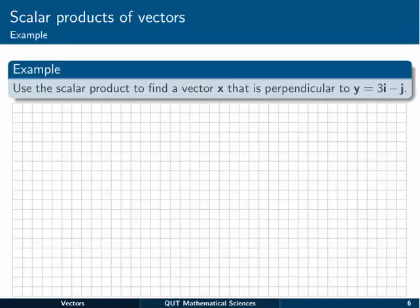Let's check out this example where we're asked to use the scalar product to find a vector x that's perpendicular to y equal to 3i minus j. Let's assume that this is in two dimensions. Pause the video now if you like and have a go at this one yourself.